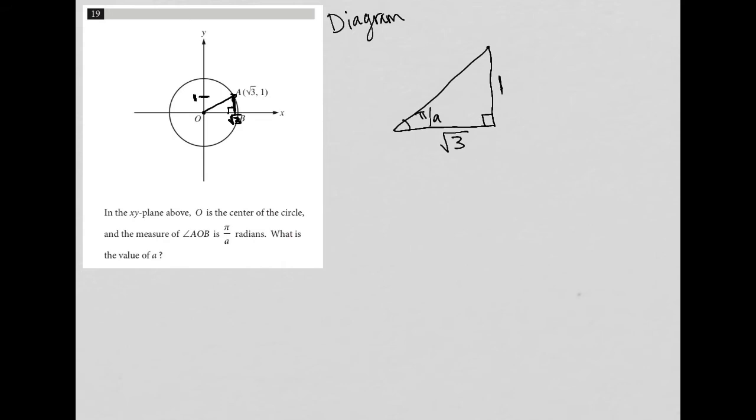I could do some more work here. I could say, well, hey, I have two sides of the right triangle. Why don't I figure out the hypotenuse? I could do that. So let's do that.